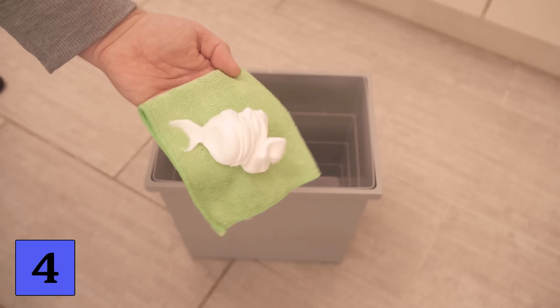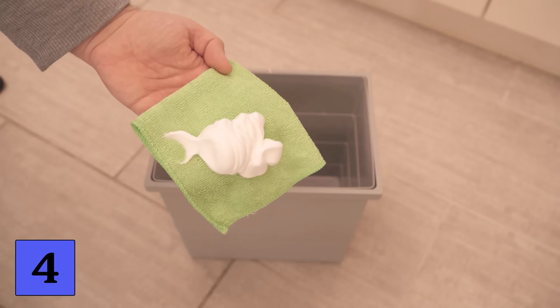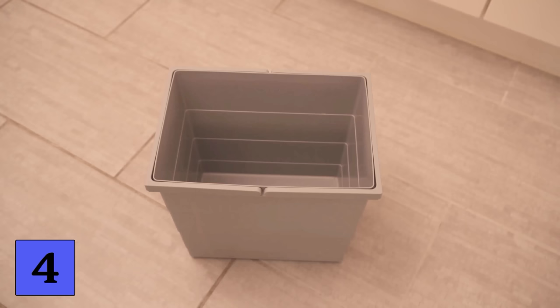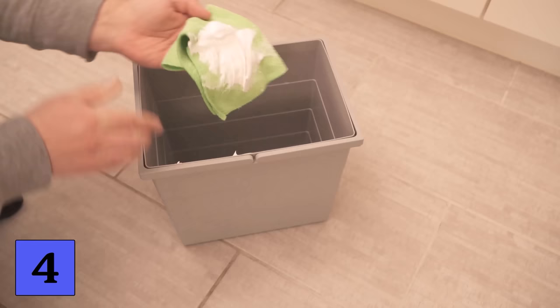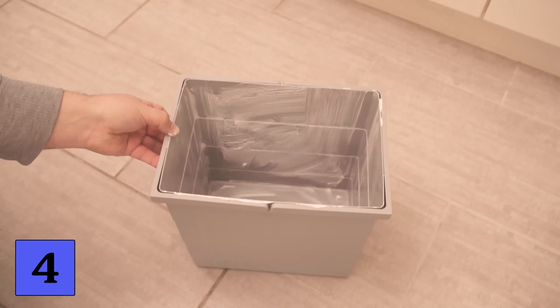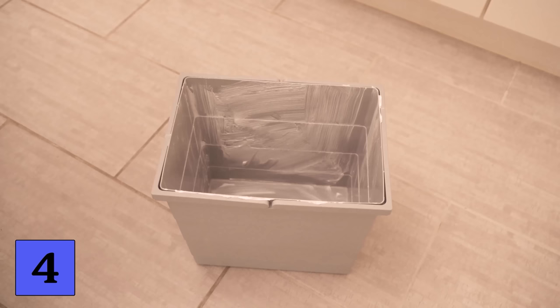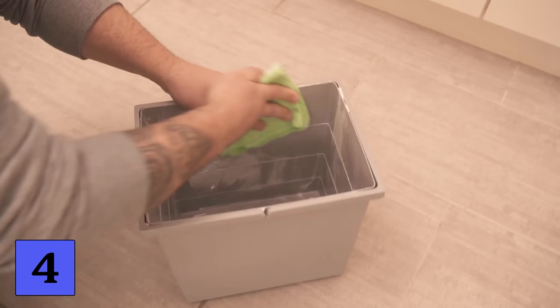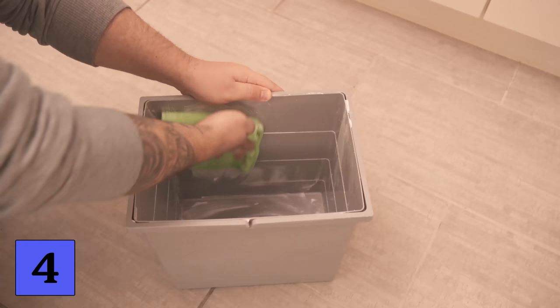Put shaving foam on a cloth and spread it all over your bin. The ingredients in the shaving foam not only clean the bin really nicely but also kill bacteria. So I take the shaving foam and spread it all over the rubbish bin so that there is some of the shaving foam everywhere. After that it's time to wait. I'll let the whole thing work for about 30 minutes before I start to wipe everything out again with a damp cloth. This is really quick and easy.